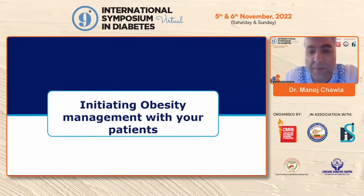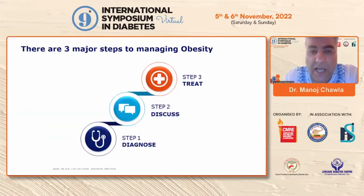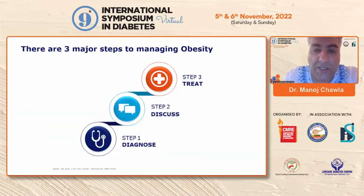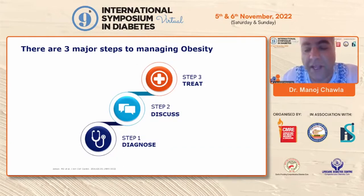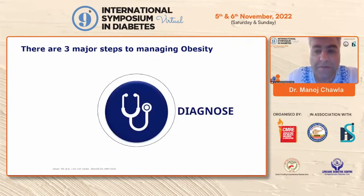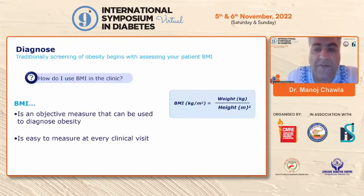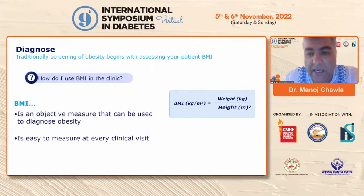Initiating obesity management with your patients has three major steps. The most important is to diagnose your patient correctly, then to discuss the aspects of different therapies you're offering, and then to treat the patient. So let's start with diagnosing. How do I diagnose it? So far, it's been the BMI.